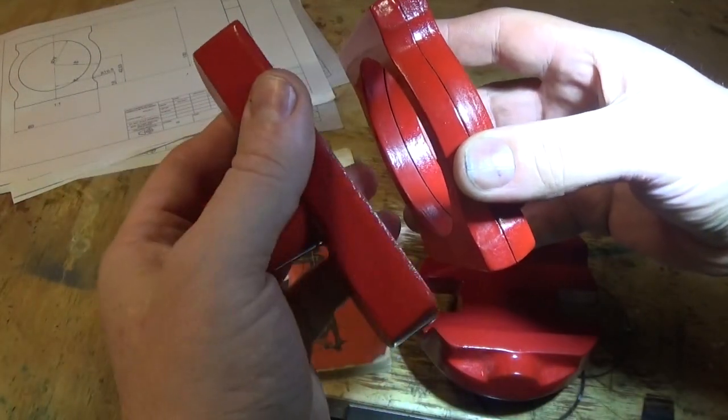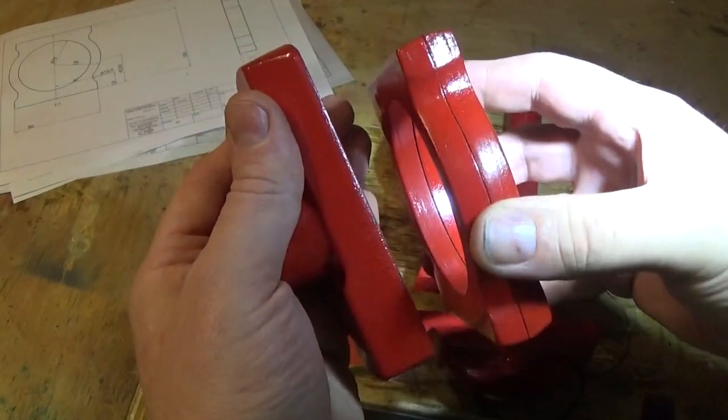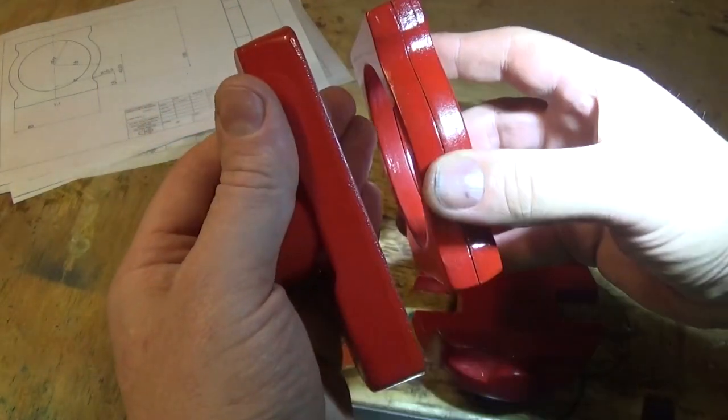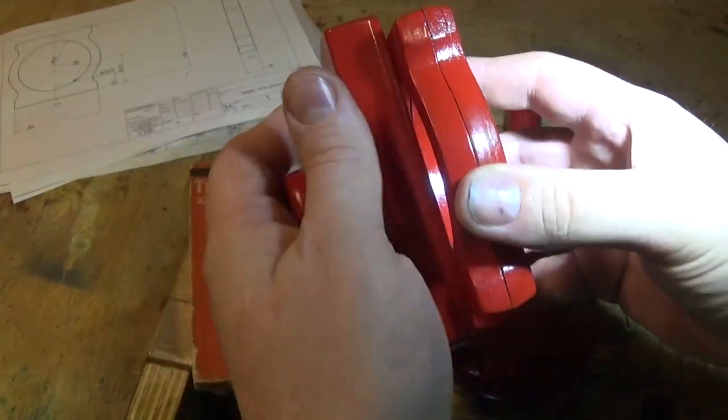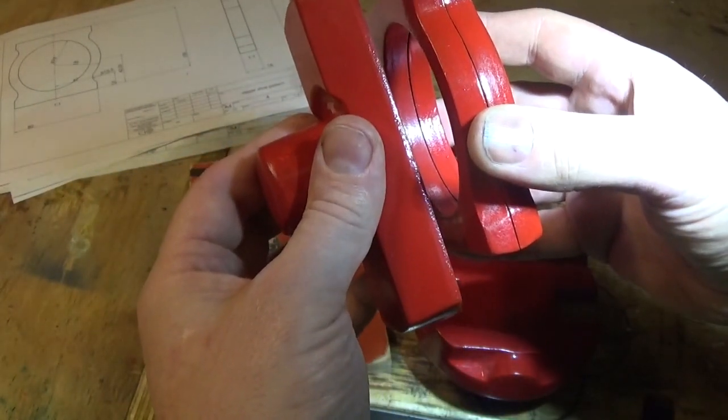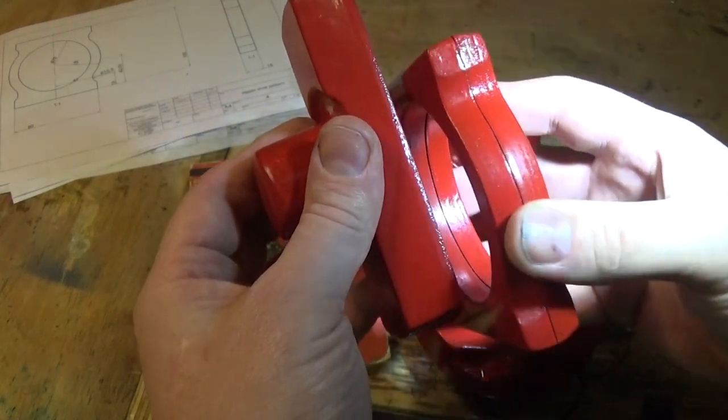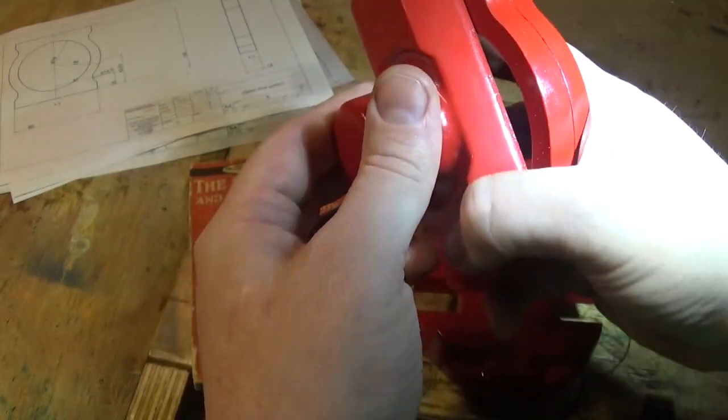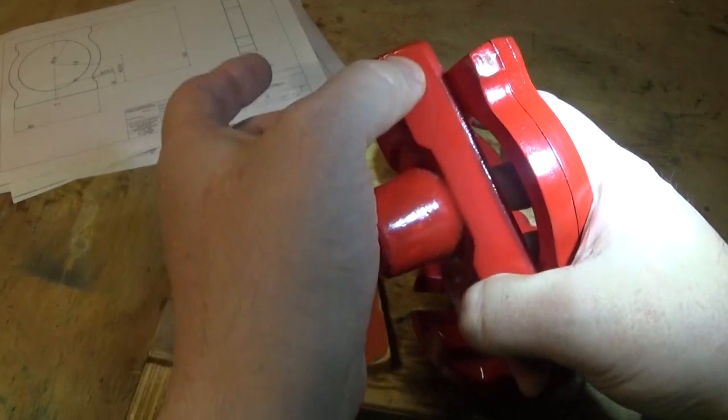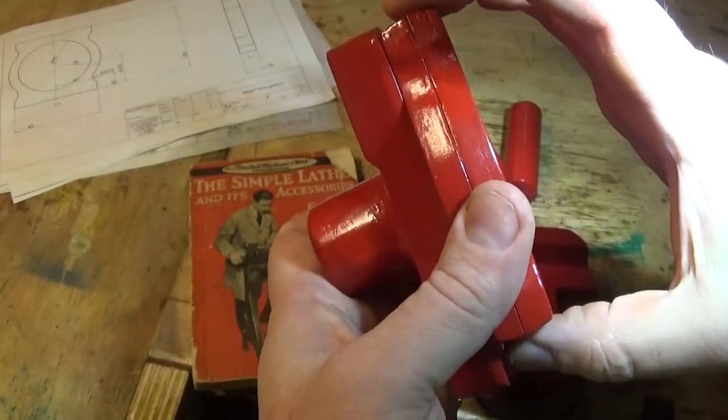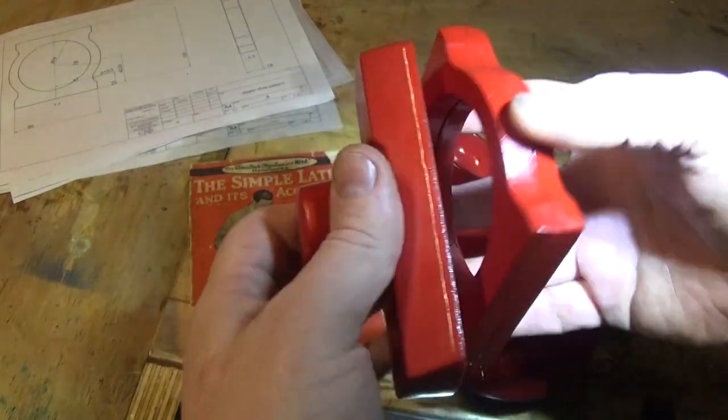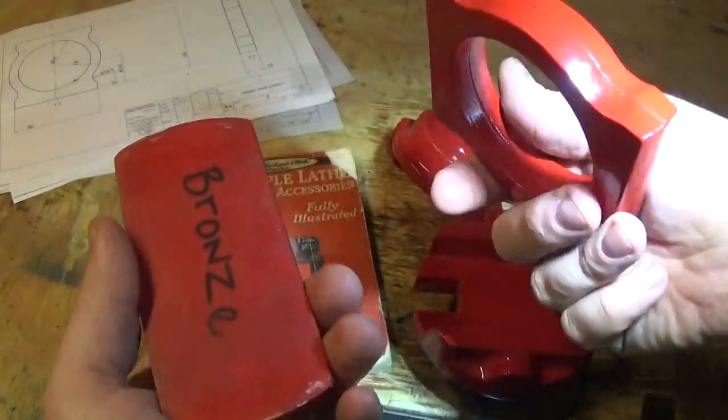This will slide on those levers backwards and forwards this way and be fixed this way so it can't move. When the cam moves this way, this slide here will do the work, and when it moves this way, these two slides on here will do the work. That's kind of how it works.